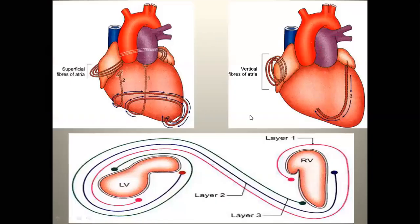The first image shows the superficial fibres. In the superficial fibres, we have seen that the fibres start from the tendon of infundibulum, beginning from the inferior surface. Then the anterior interventricular group crosses. After this, fibres reach the apex, which is spiraled.